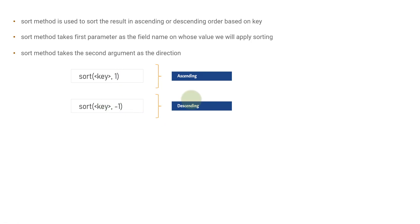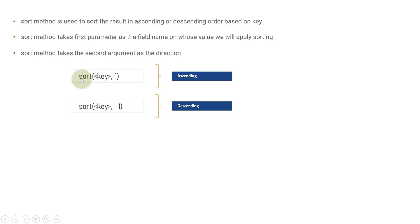To clarify ascending versus descending: taking the example of user creation, all users will have a created-at time. In ascending order, the most recent user will be at the top and the oldest user at the bottom. In descending order, the oldest user will be at the top and the most recent user at the bottom. The key thing to remember is that the sort method takes two parameters: the first is the key on which you want to perform sorting, and the second is the direction using 1 for ascending and minus one for descending.